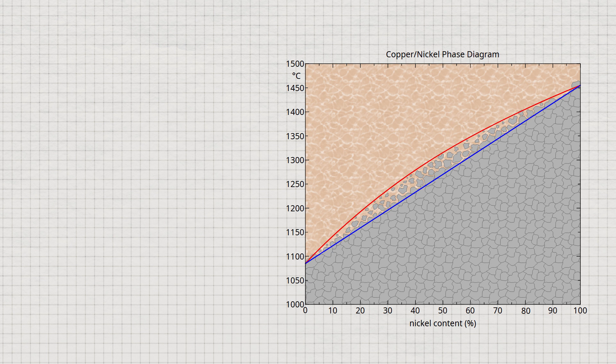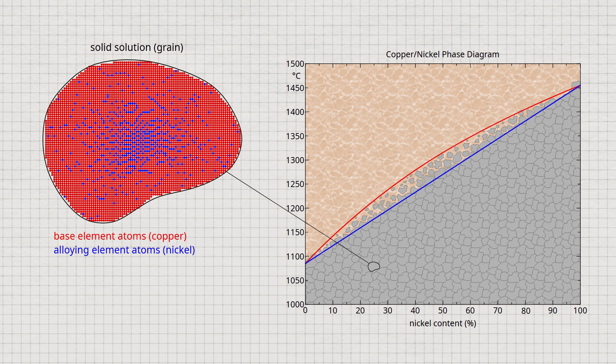The phase diagram of the copper-nickel alloy system is shown in the figure. Due to the complete solubility of the alloying element, it might be assumed that the nickel is homogeneously distributed in the solid solution microstructure.